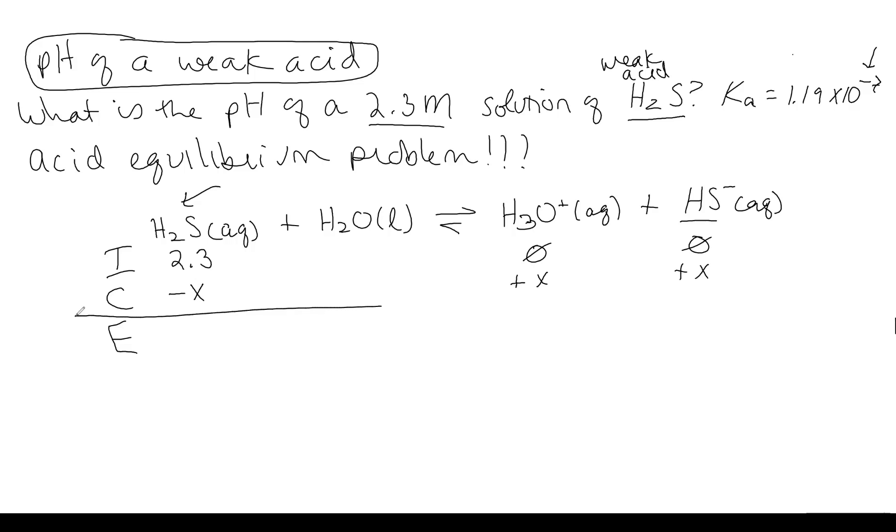This equation is going to shift as it goes toward equilibrium. So we know we have to have sum up everything at equilibrium. So it's going to have to shift toward products, which means it's going to have to come from reactants. And then we're just going to sum these guys together.